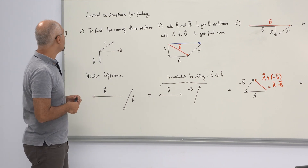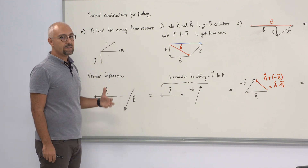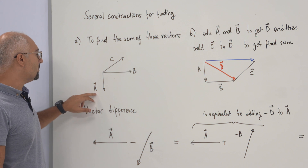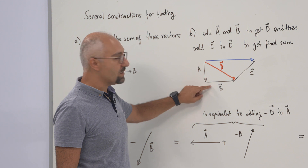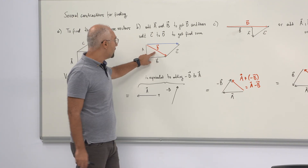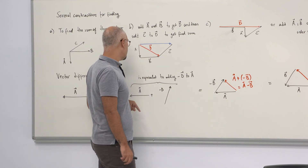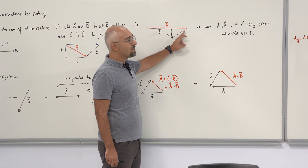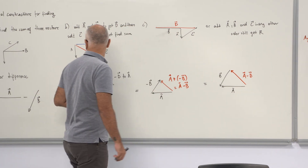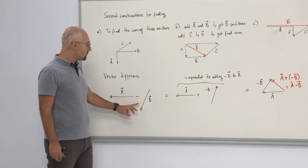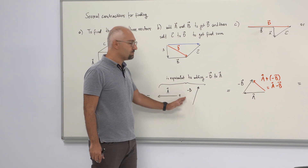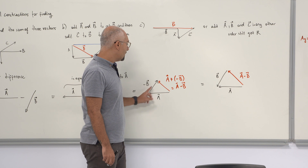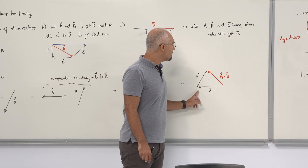In this part of the lecture, we are going to start the important calculus of vectors — first how we can add vectors together, then how we can subtract vectors. For addition, you can sum vectors A, B, and C: summing A and B gives vector D (the red arrow), and summing D and C gives vector R (the blue arrow). Regardless of the order you sum them, you always get the same resultant vector. For vector subtraction, A minus B is equivalent to adding A plus negative B, where vector B reverses direction.